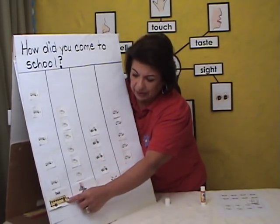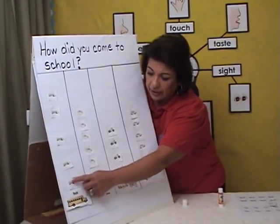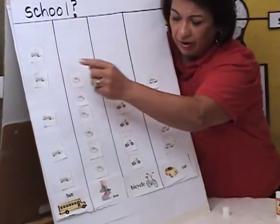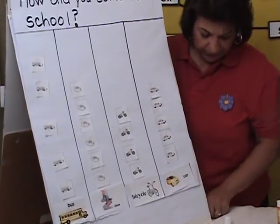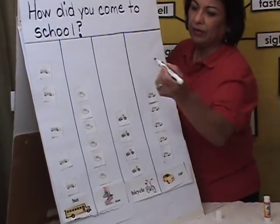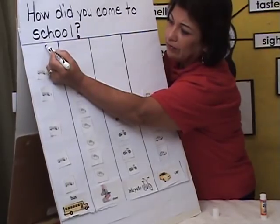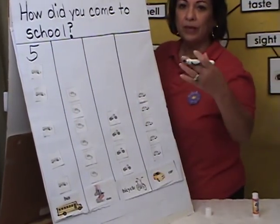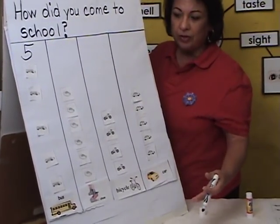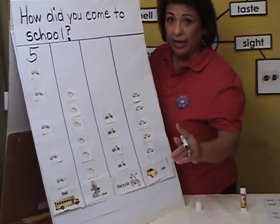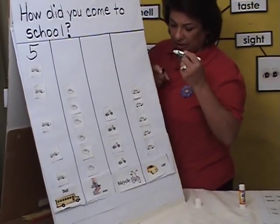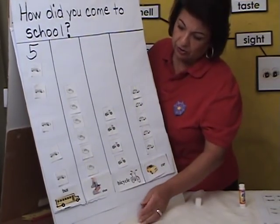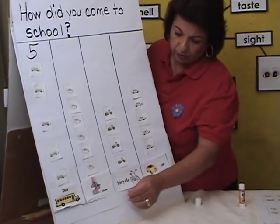Let's count the bus: one, two, three, four, five. Let's write that number down — five. Of course, they're counting with you. Have them count with you. And as you're counting, make sure that you're touching each of the type of transportation.